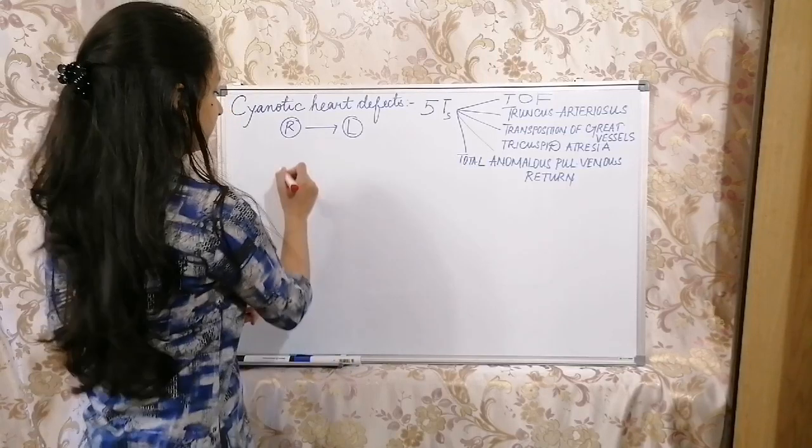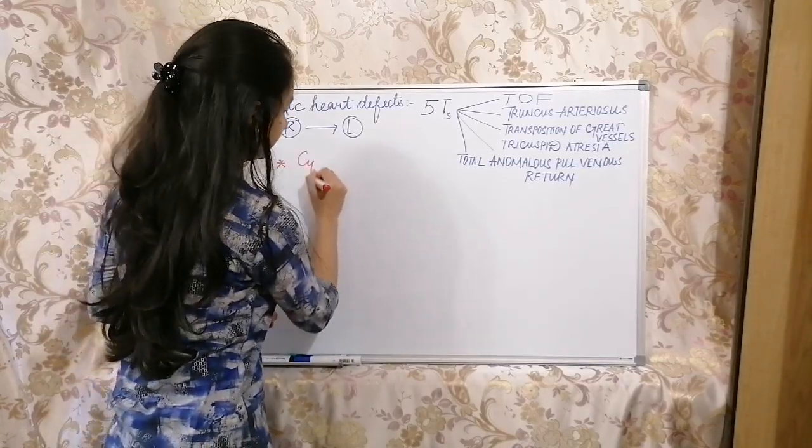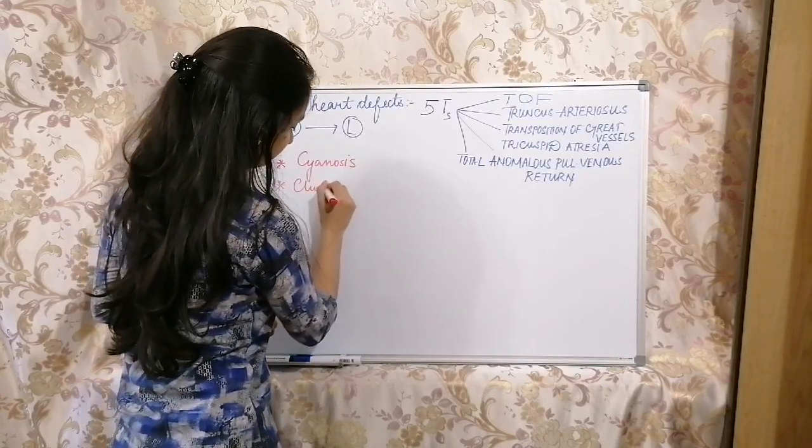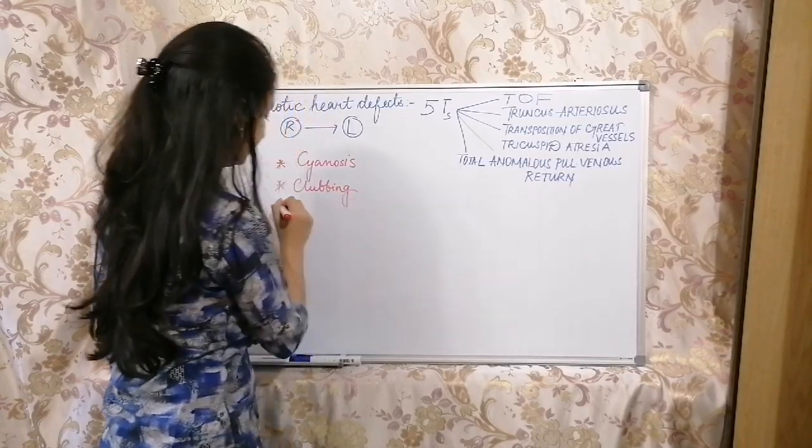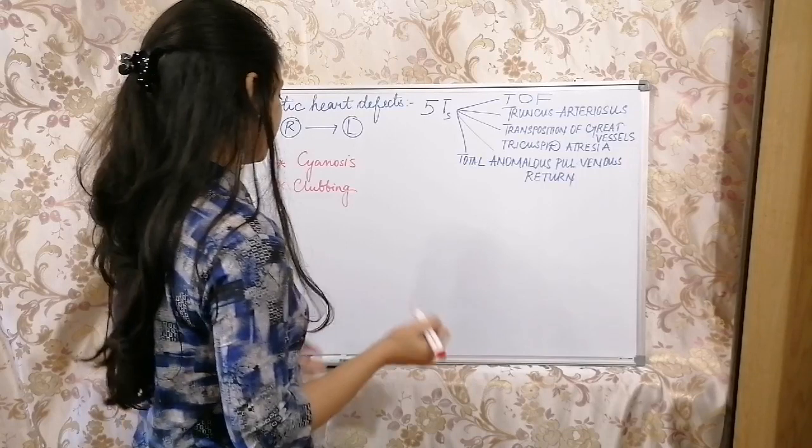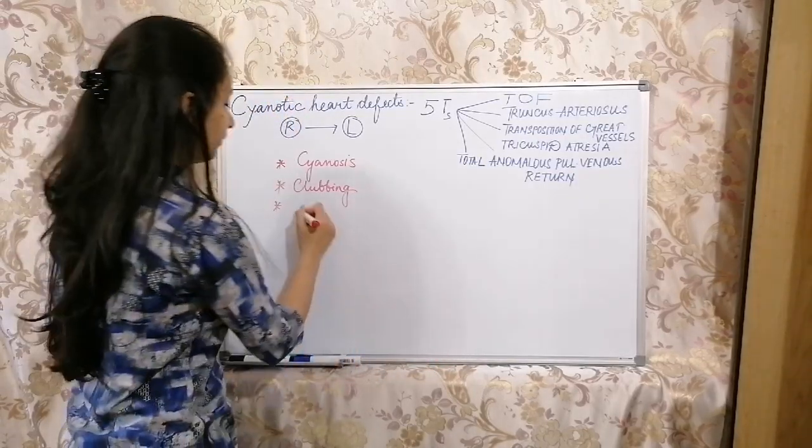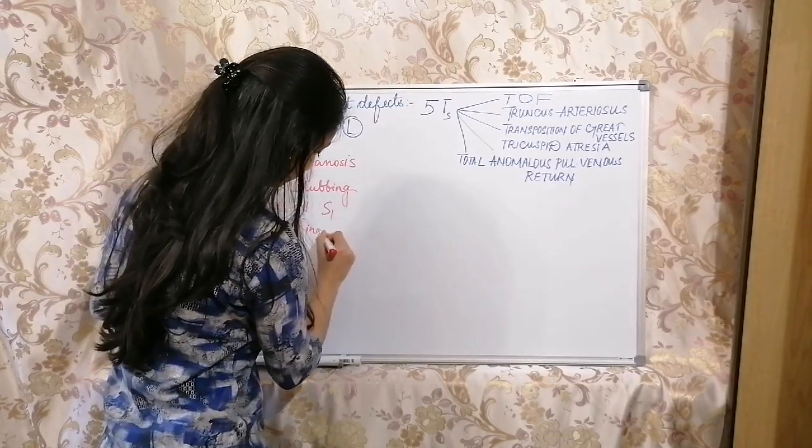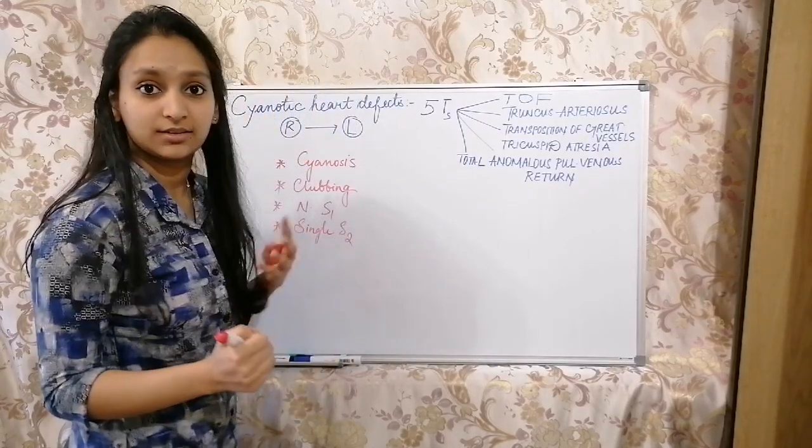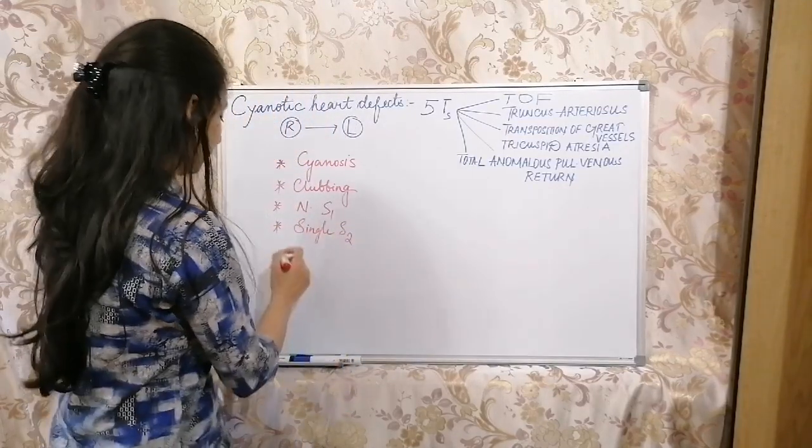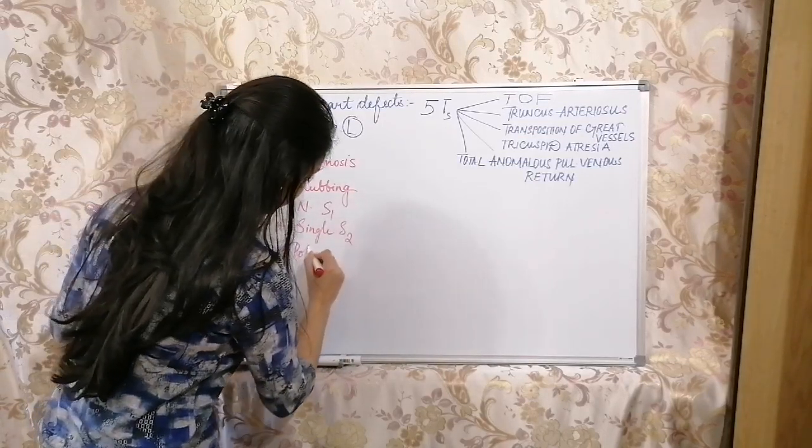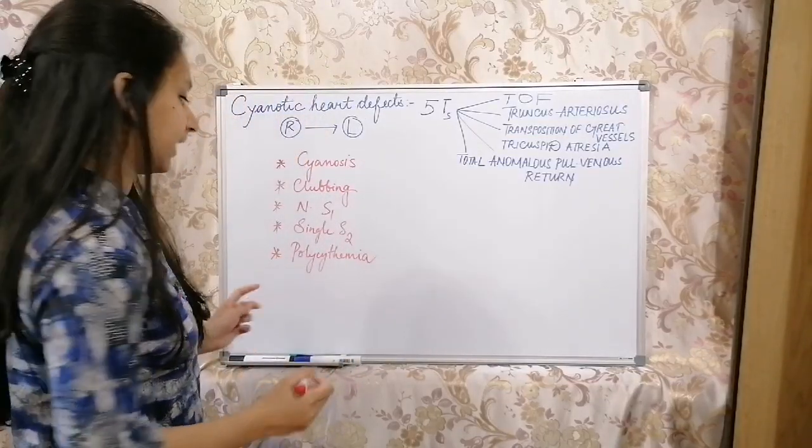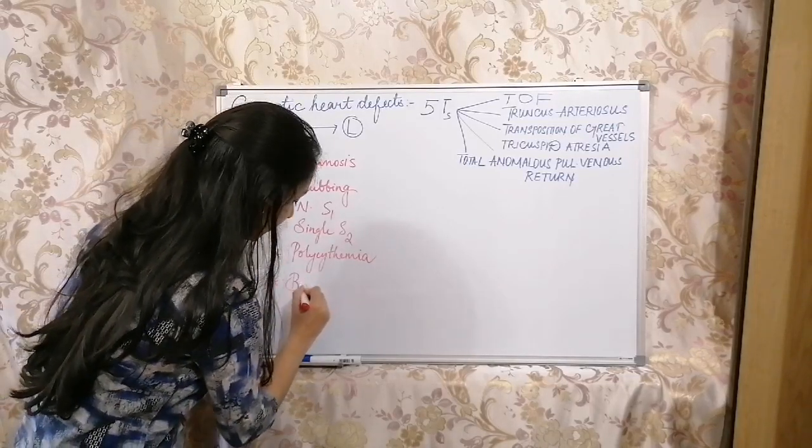When it comes to the main clinical features: cyanosis obviously, clubbing of fingers, and just like other heart defects, there's nothing related with S1 sound or S2 sound. There's a normal S1 and single S2. What we get is ejection systolic murmur and cyanosis. What else? Polycythemia and breath test. When it comes to X-ray, we can see a boot-shaped heart.